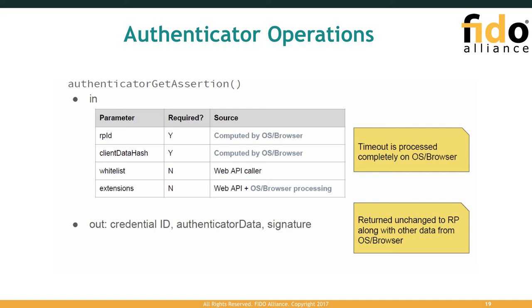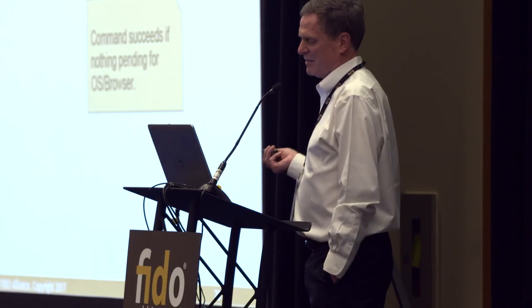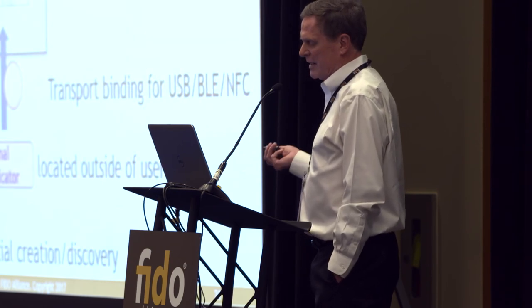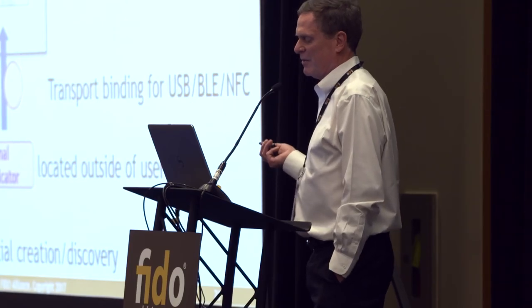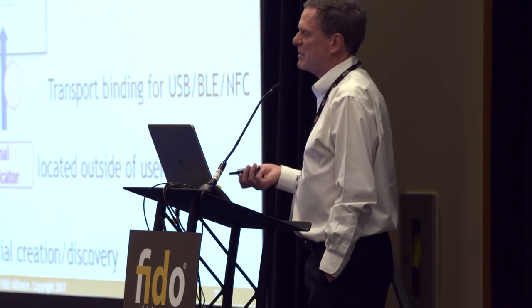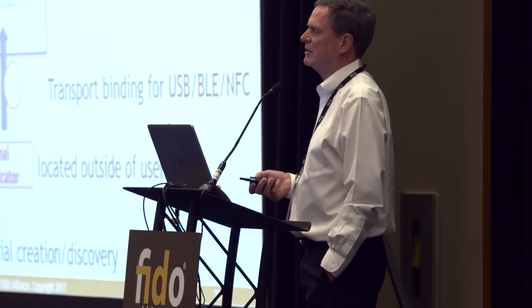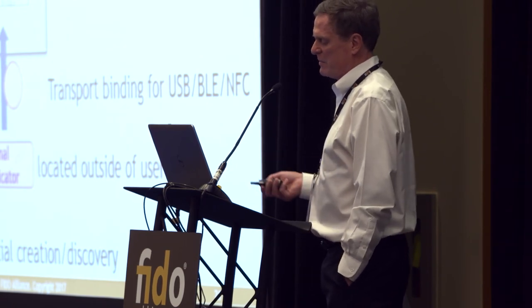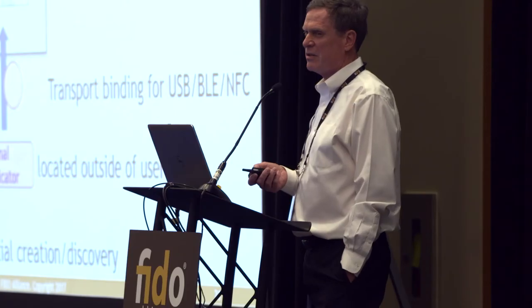Authenticator operations are very similar in nature — we can have cancel requests and error conditions. CTAP is what you use when calling out to an external device. Currently, our specification defines transport levels for USB, BLE, and NFC. There may be needs for others like QR code. We are in revision two of CTAP and have some implementations out there. We've done some interoperation on the CTAP protocol with some of the devices.